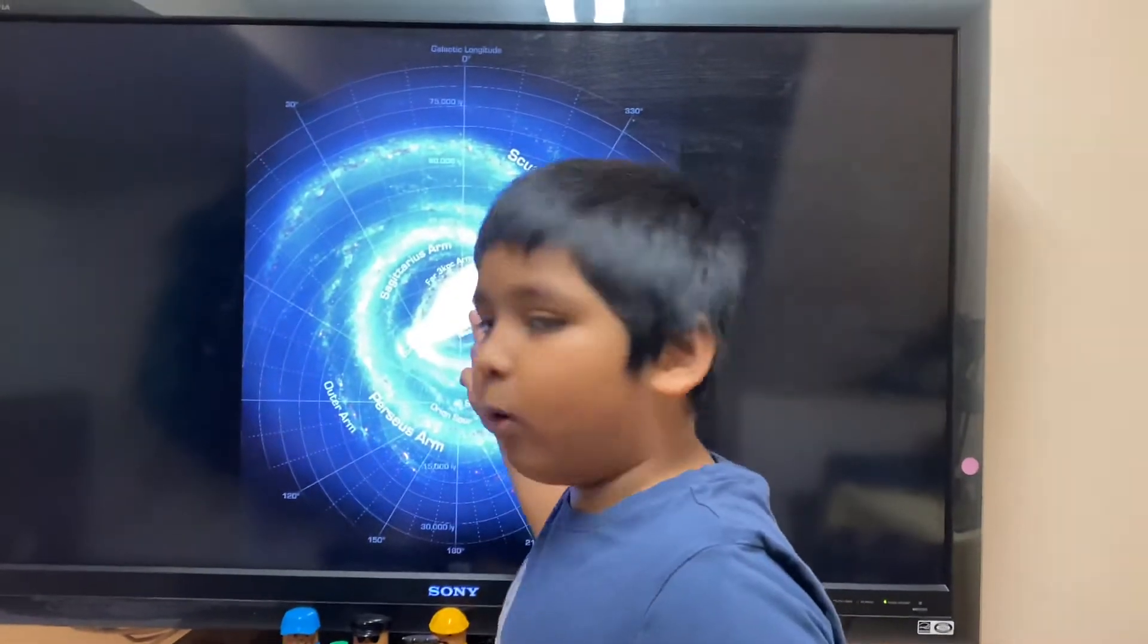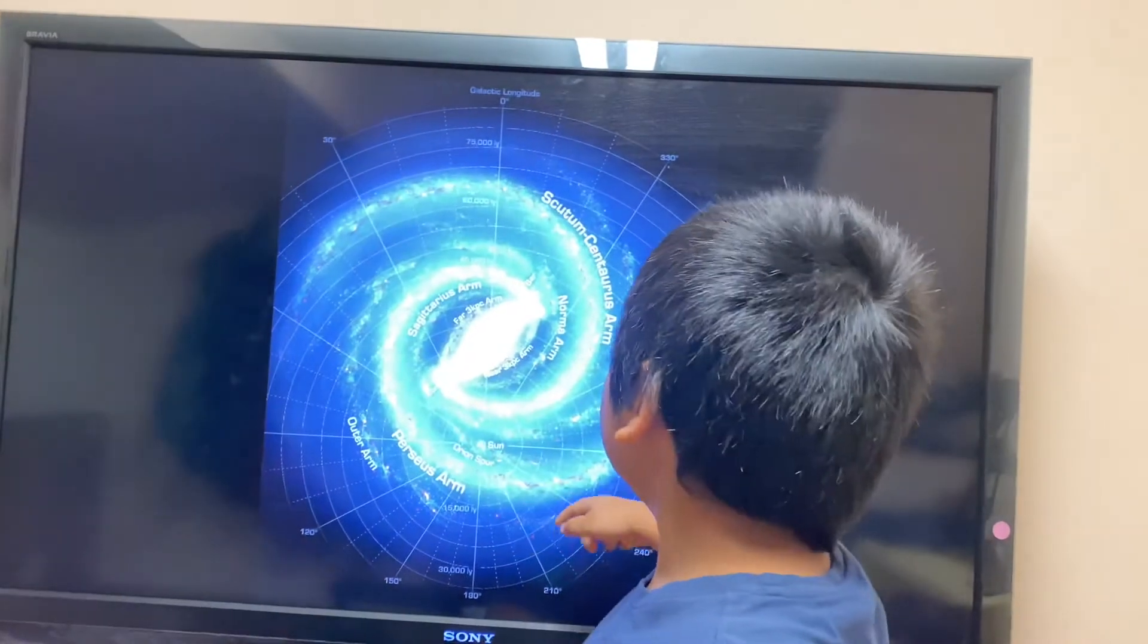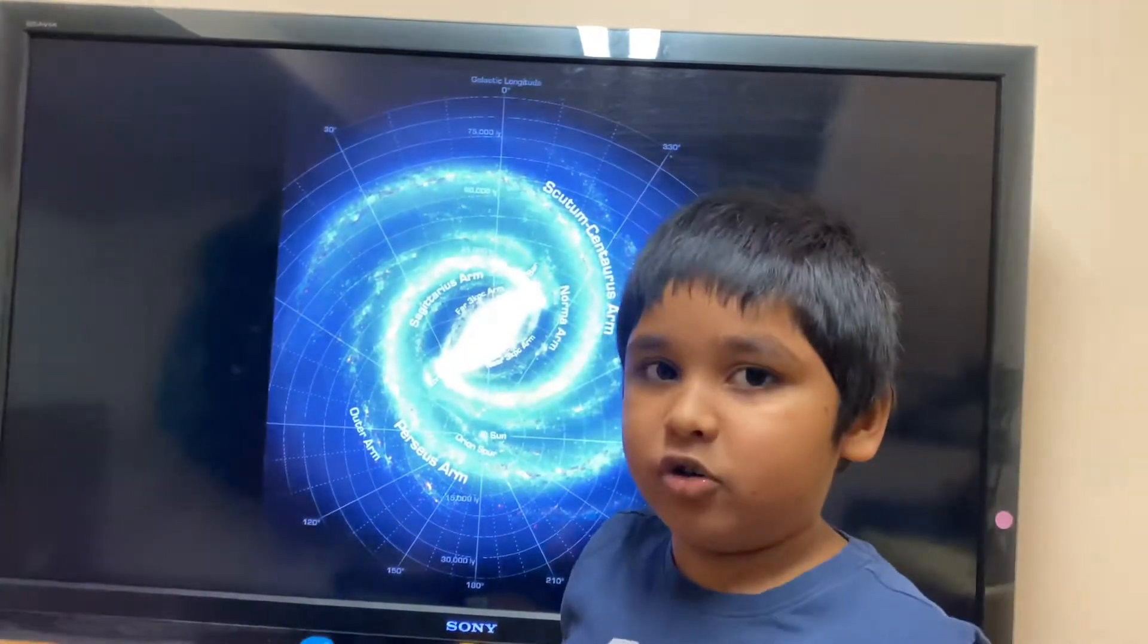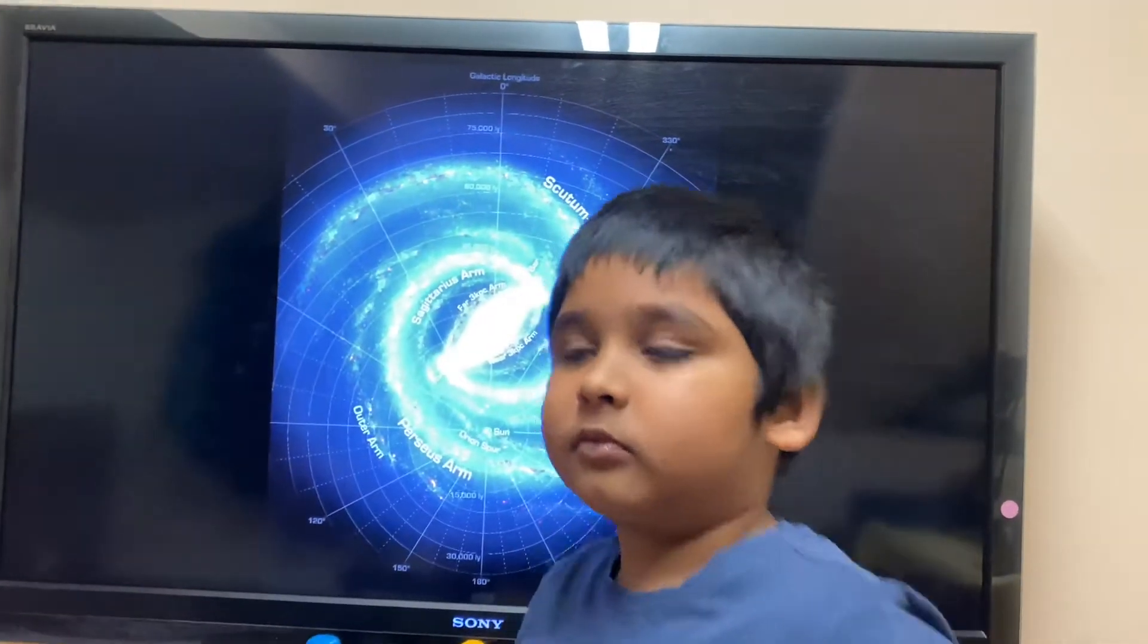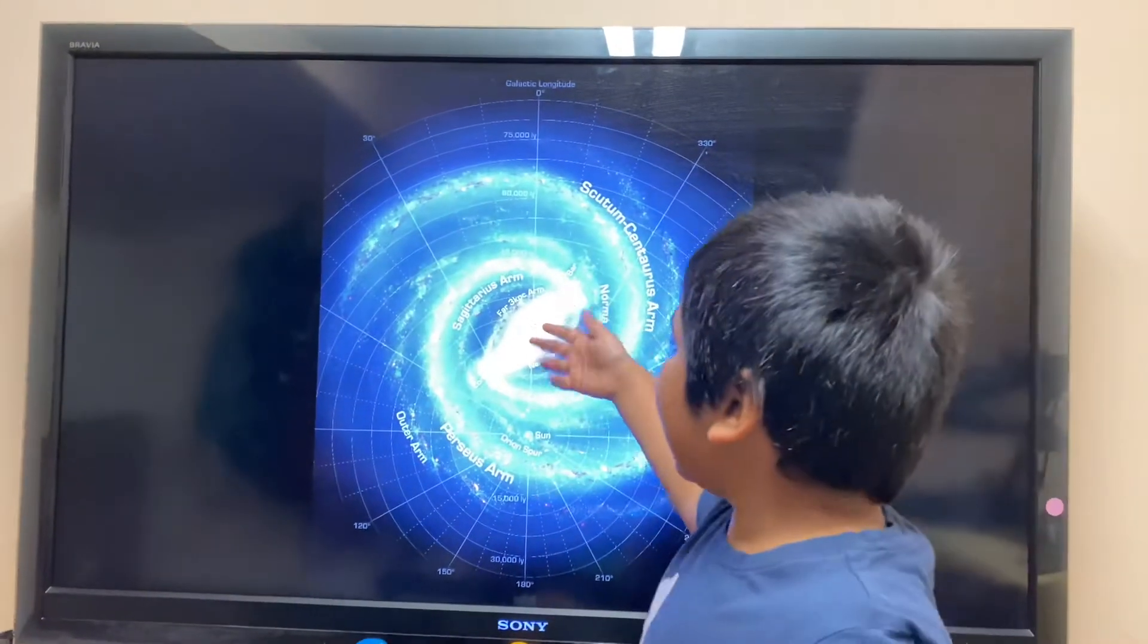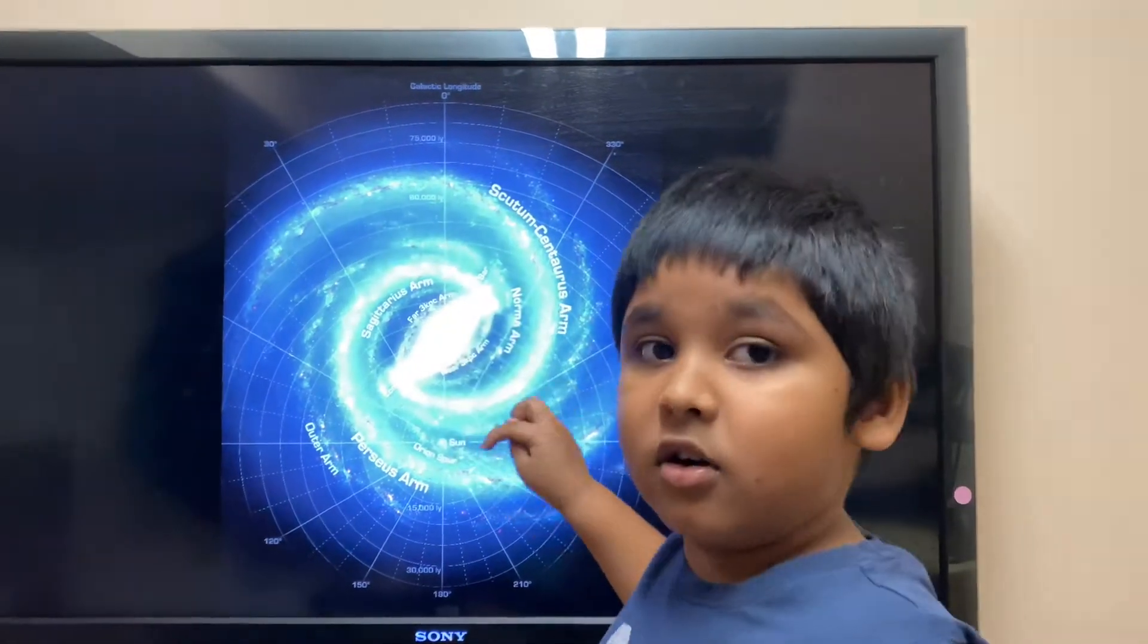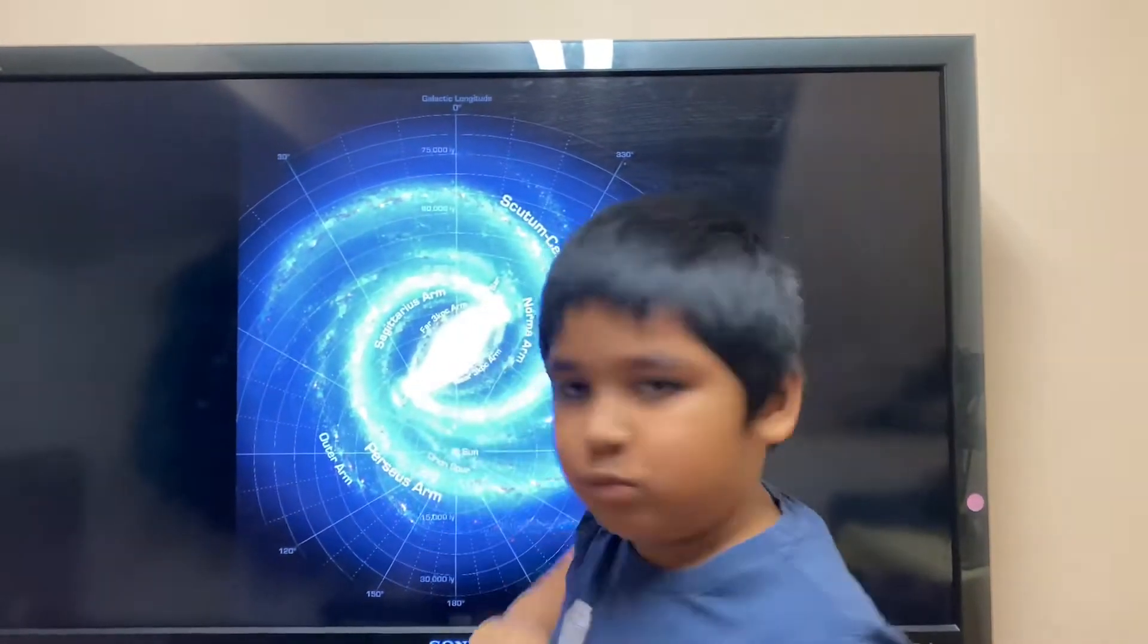But how old is the Milky Way Galaxy? It is 13.6 billion years old. So that's really big, and it will take light lots of years to go to the other side. And so it has a black hole in the middle, and it's kind of sucking things when they're passing in its way.